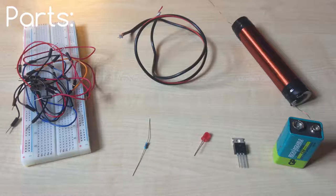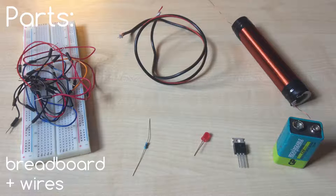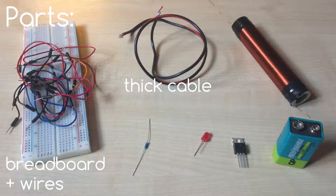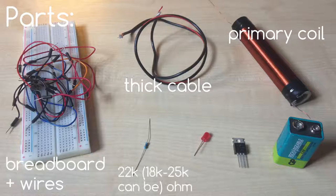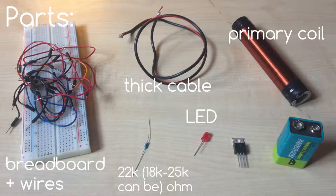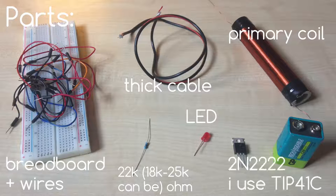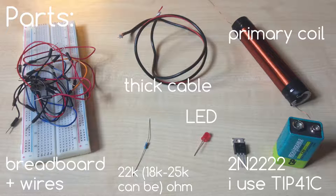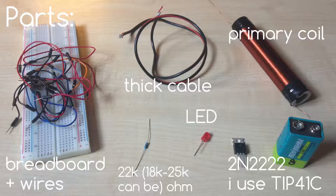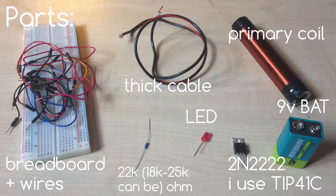For today's build we need breadboard with some wires, one thick cable, our primary coil that I show you how to wind, 22 kΩ resistor, some LED and some transistor. You can use 2N2222, but I prefer transistor with this small heatsink, like TIP 41C, because transistor gets pretty hot in this configuration and at least 9V battery as power supply. Links for the parts are in video description.